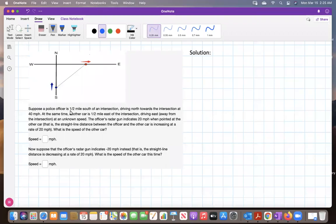Suppose a police officer is one half mile south of an intersection, driving north towards the intersection at 40 miles per hour. At the same time, another car is one half mile east of the intersection, driving east, away from the intersection at an unknown speed.